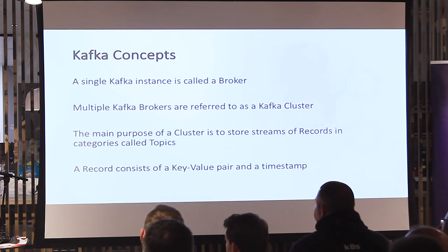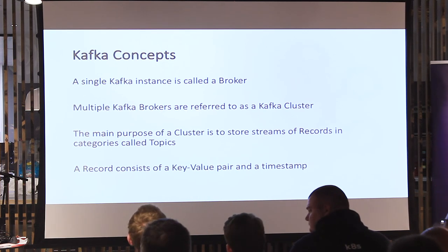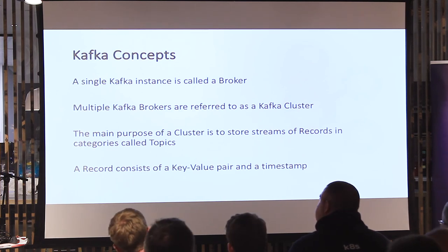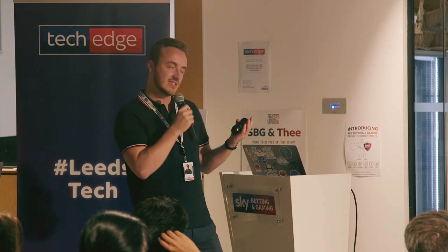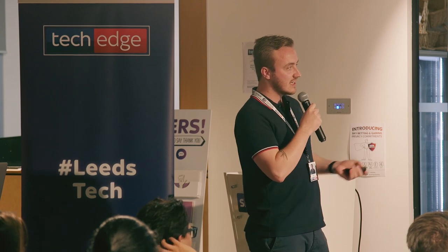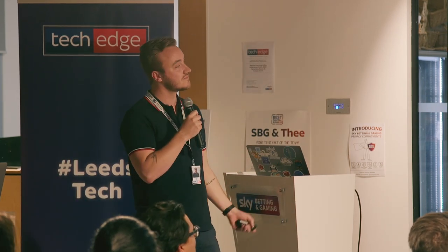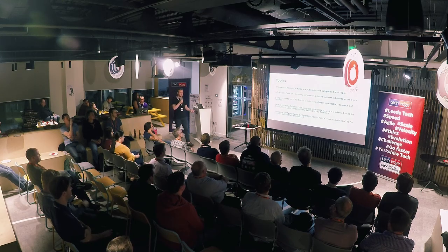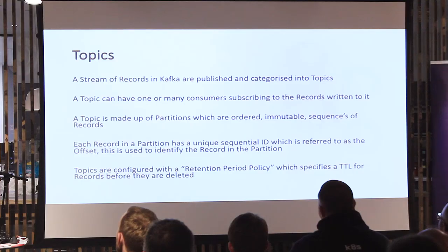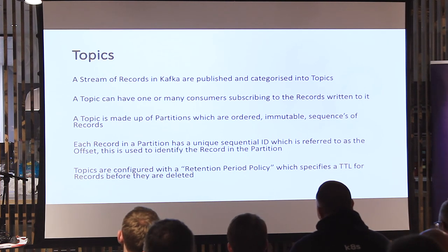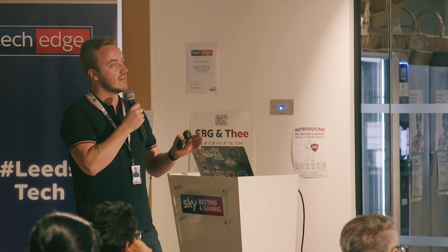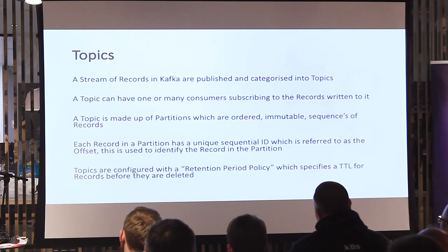The main purpose of the cluster is to store streams of records — the records are like the letters going into the letterbox. These records are categorized and stored in topics. The topic inside is like that steel grid inside a letterbox that stops people stealing mail. The record sitting in the topic consists of a key-value pair and a timestamp. A topic is a stream of records that have been published and categorized, and it can have one or more consumers that subscribe to it. A topic is split down into partitions, which are ordered sequences of records. Each record in the partition has a unique sequential ID referred to as the offset, which is used to identify the record in the partition.